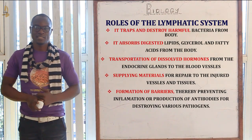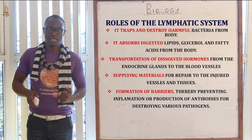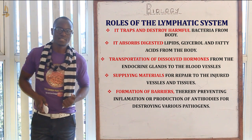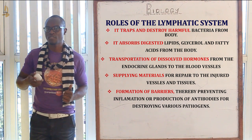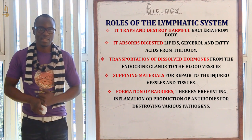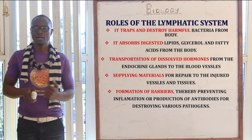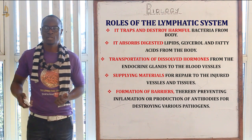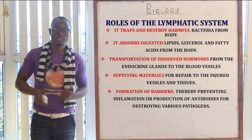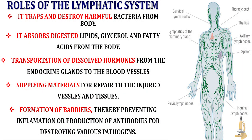Now let's look at the roles of the lymphatic system. The first role is that the lymphatic system traps and destroys harmful bacteria from the body — this is the function of lymphocytes contained inside the lymph. The second role is that it facilitates the transportation of different hormones from the endocrine glands to the different blood vessels in the body. As seen in the diagram on the right, it shows the positions of the lymphatic system and lymph nodes in the human body.